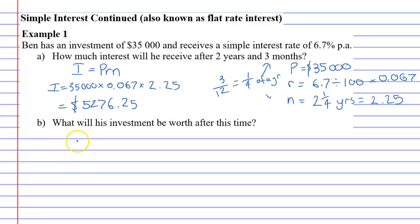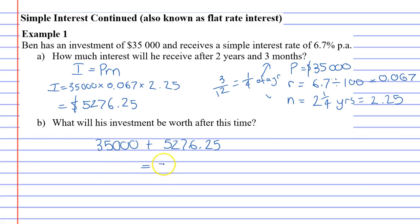Question B: what will his investment be worth after this time? We know that he started with 35 grand and he's received interest of $5,276.25, so altogether he now has $40,276.25.